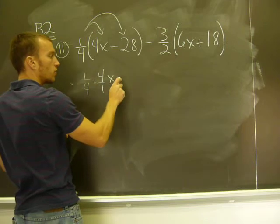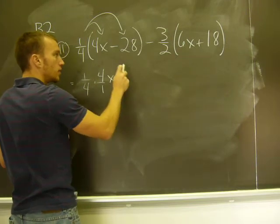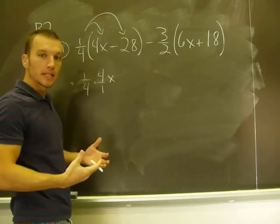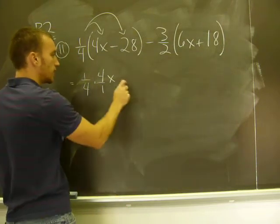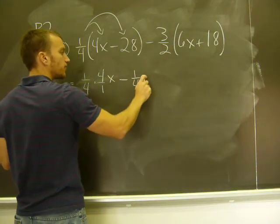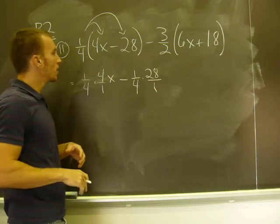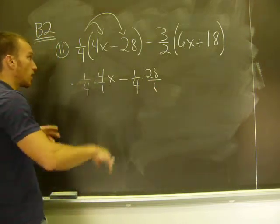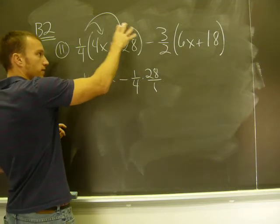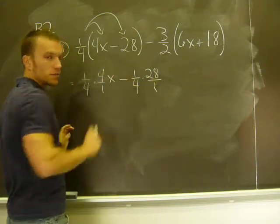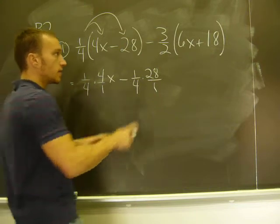I'm going to distribute the one-fourth to the negative twenty-eight. So I know it's a positive times a negative, so I know my result should be negative. I need really one negative sign. I'm going to put it there. And again, make my twenty-eight over one as a fraction. Now, again, positive times a negative. The result should be negative. You can note that when you go through.